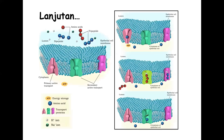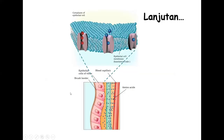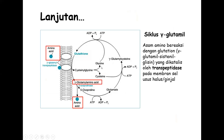Jadi bentuk 2-3 peptida diserap dulu ke dalam sel, kemudian dijadikan asam amino tunggal di dalamnya. Ada juga yang namanya siklus gamma-glutamil, di mana asam amino bereaksi dengan glutathione yang dikatalis oleh gamma-glutamil transpeptidase pada membran sel usus halus dan ginjal.